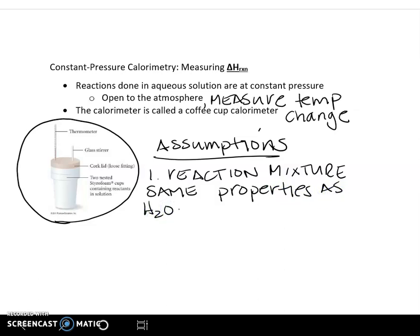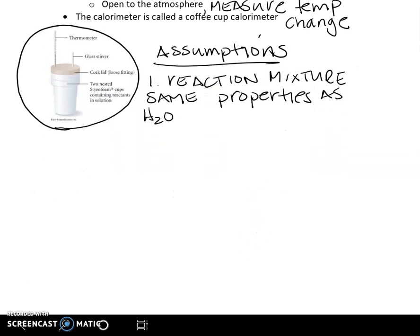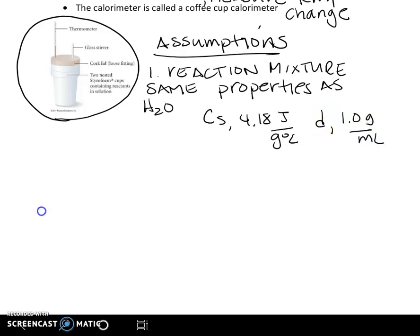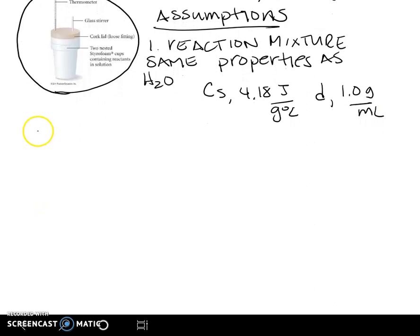What do I mean by the same properties? Well, we're going to assume our mixture has the same specific heat capacity of 4.18 joules per gram degrees C, and we're going to assume that it has the same density, which is 1 gram per milliliter. And we're making that assumption because the solution should be dilute.